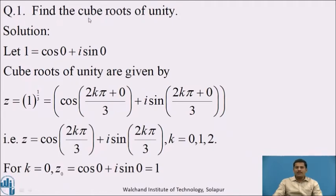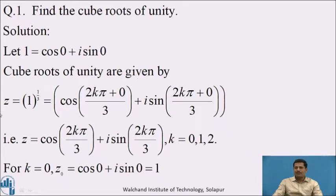Consider the first example: find the cube roots of unity. The given complex number is unity, i.e., 1, which in polar form is cos 0 + i sin 0. By the theorem, the cube root is z = 1^(1/3) = cos(2kπ/3) + i sin(2kπ/3), where k = 0, 1, 2.